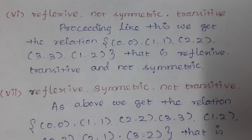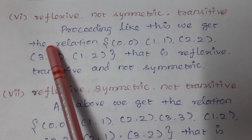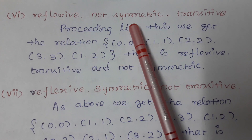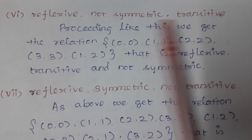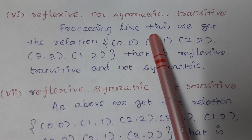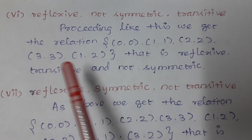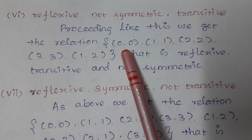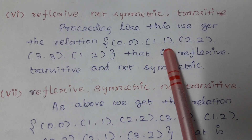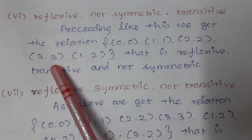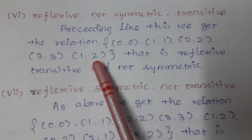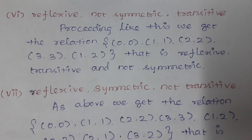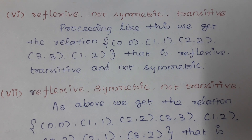Next one: reflexive, not symmetric, and transitive. We have the relation {(0,0),(1,1),(2,2),(3,3)}, then we add (1,2). Now we have it as reflexive.